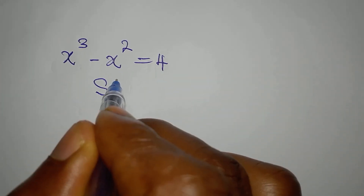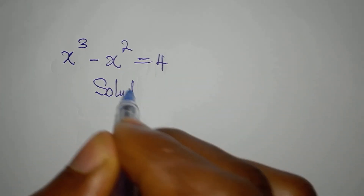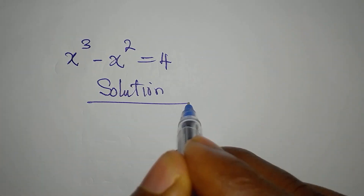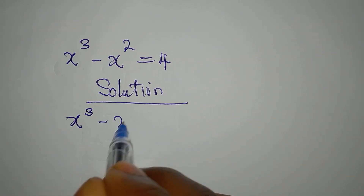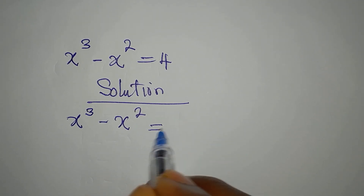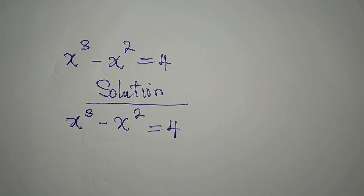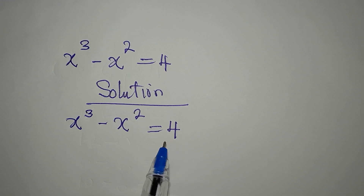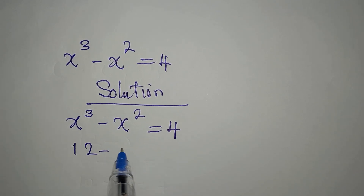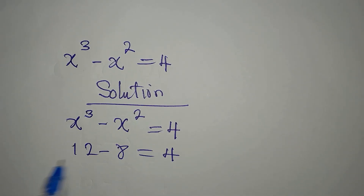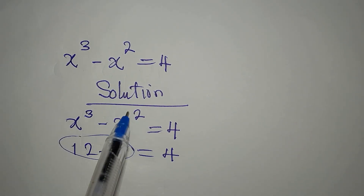Hi everyone, let's solve this equation and bring out the complete solution. What I want to do now is work on the right-hand side. The 4 here is the same as 12 minus 8, which gives 4, but this cannot be in the required form, so I'm not going to use that.